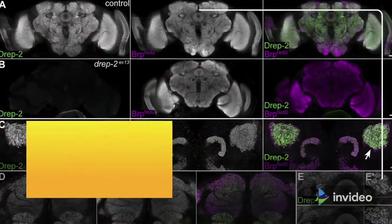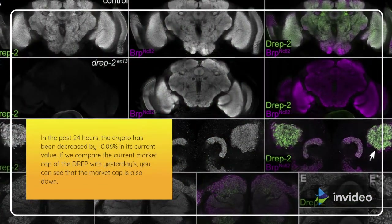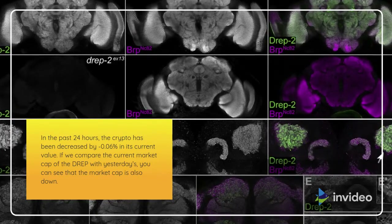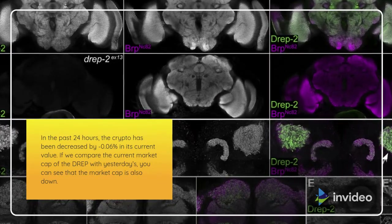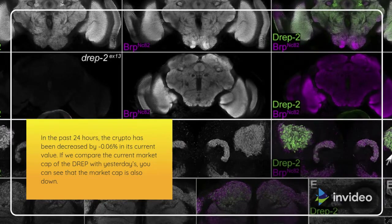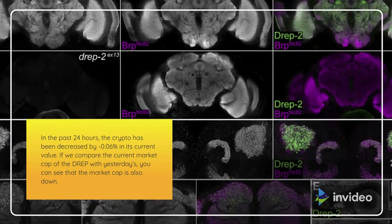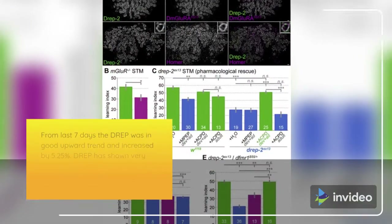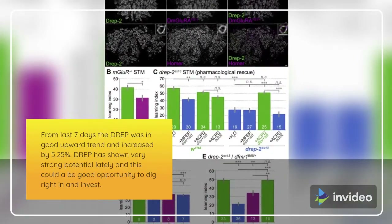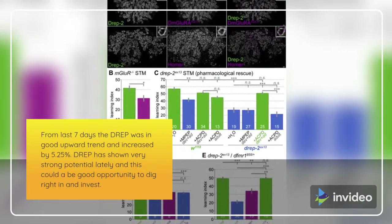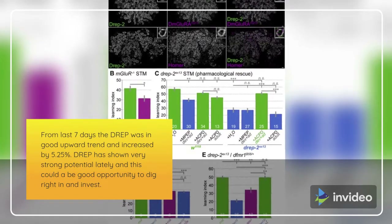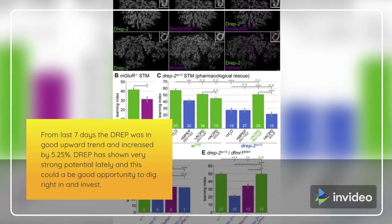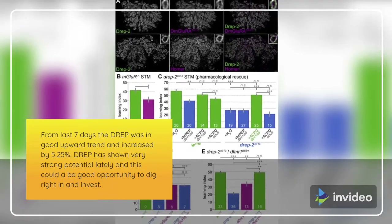In the past 24 hours, the crypto has decreased by minus 0.06% in its current value. If we compare the current market cap of DREP with yesterday's, you can see that the market cap is also down. From the last 7 days, DREP was in a good upward trend and increased by 5.25%. DREP has shown very strong potential lately, and this could be a good opportunity to dig right in and invest.